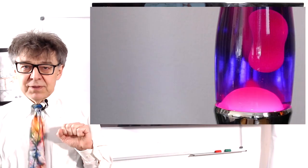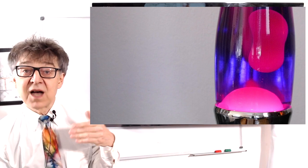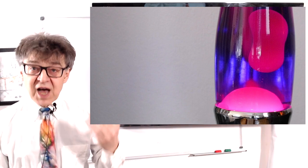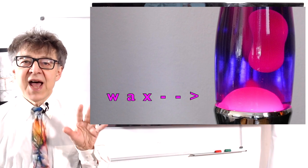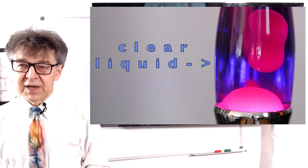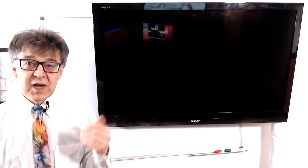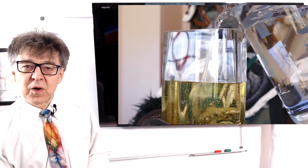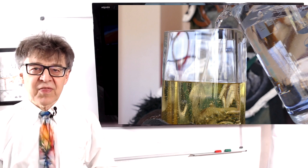In the lava lamp we also have two liquids and their densities are essential. The lava is an opaque wax which, when cold, has a higher density than the clear other liquid in the lamp. We will later build our lava lamp using water and oil. But before we do this, one more important thing about density.